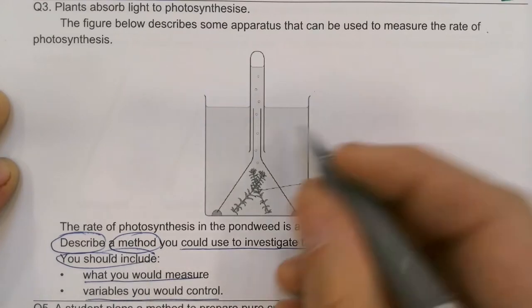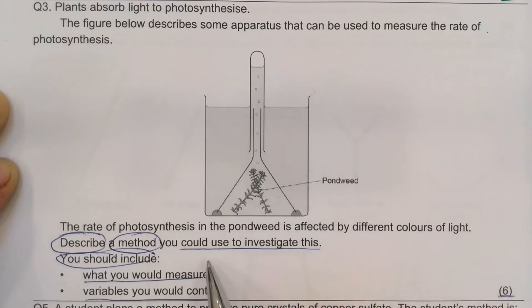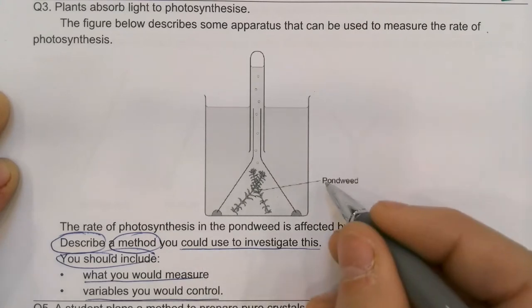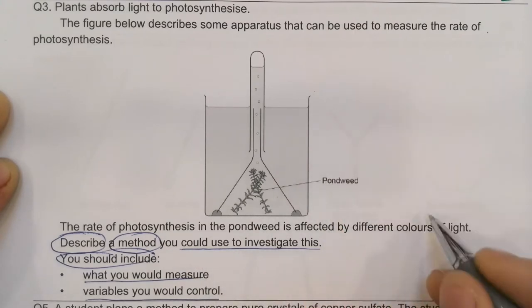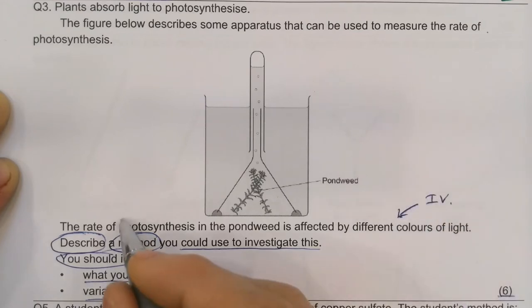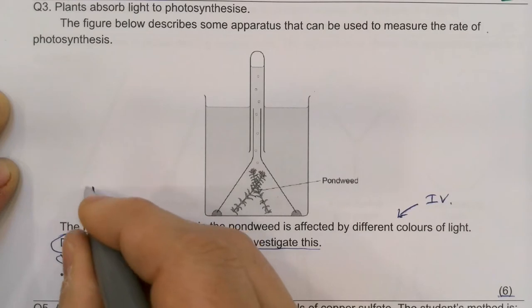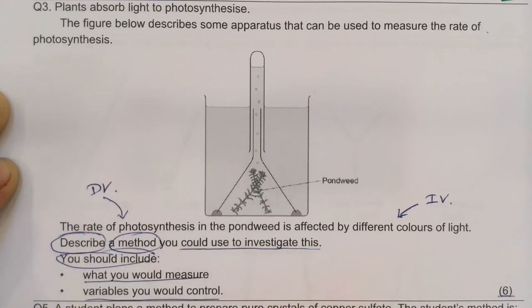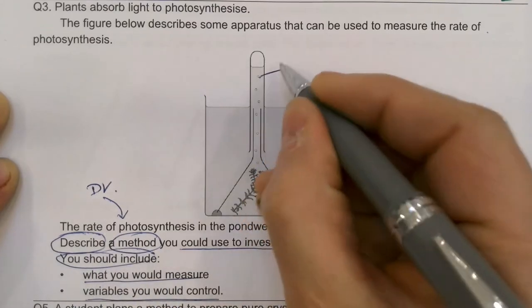So I'm going to measure, just quickly on here, what am I going to change? So it's affected by different colored lights. So this is going to be the thing I'm changing. So this is going to be my independent variable. The rate of photosynthesis here is my dependent variable, the thing I'm going to measure. What's going to tell me the rate of photosynthesis? Rate means how much is happening every second.